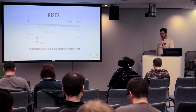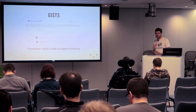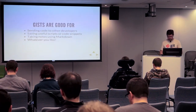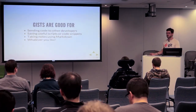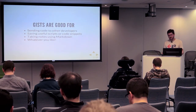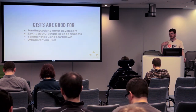Gists are another main feature of the GitHub ecosystem — they give you the ability to post a small snippet of code to take notes, save useful scripts, or show something for review. It's like a pastebin that's associated with GitHub, has gotten a lot of traction, and does things like inline Markdown processing.